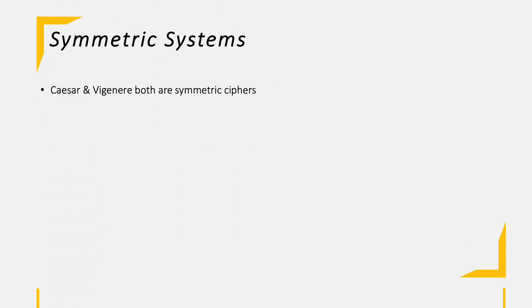Now let's talk about symmetric and asymmetric systems. We start with symmetric systems as Caesar and Vigenère both are symmetric ciphers. There is only a single key which is used to both encrypt and decrypt the plain and ciphertext.